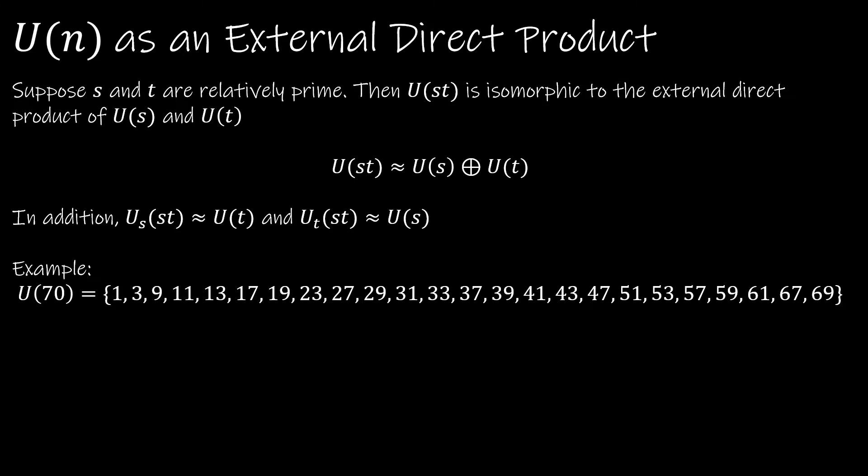What do we know about the unit groups in terms of external direct products? Well, we can say that if s and t are relatively prime, then U(st) is isomorphic to the external direct product of U(s) and U(t). Or in symbols, it looks like this.